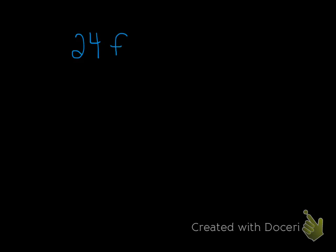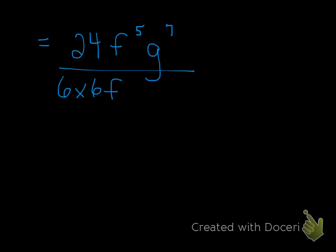So 3 times 8 was 24. Then we had f to the power of 4 plus 1, which is f to the power of 5. And then we have g to the power of 3 plus 4, which is g to the power of 7. Don't forget your equal signs. Now on the bottom, we're going to take our 6s and show that we're multiplying them, take our base of f, keep the same base, and add the exponents. For g, we keep the same base and again add the exponents.